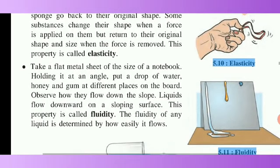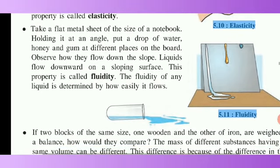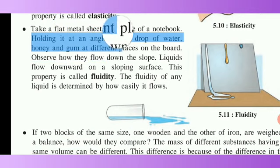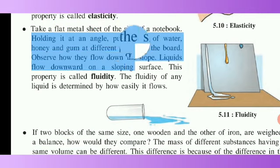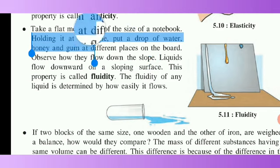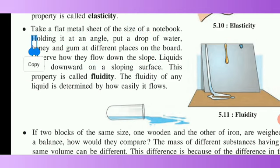Take a flat metal sheet the size of a notebook. Holding it at an angle, put a drop of water, honey, and gum at different places on the board. Observe how they flow. Liquid flows downwards on a sloping surface. This property is called fluidity. The fluidity of any liquid is determined by how easily it flows.